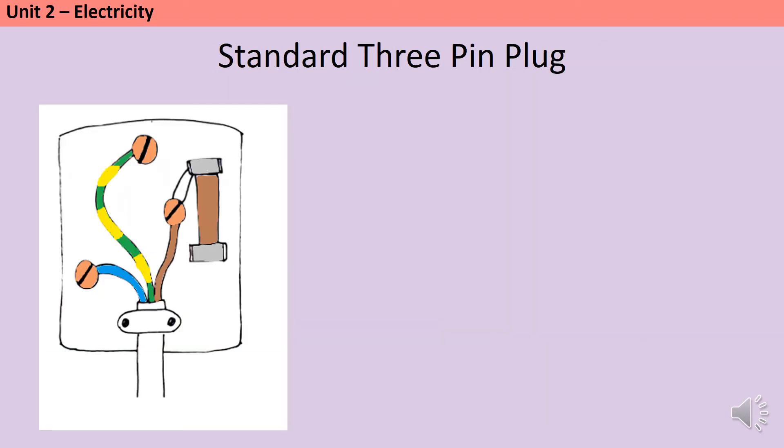The majority of British appliances are connected to the main supply using a standard 3-pin plug, and you need to be able to identify some key features of these. The outside casing of the plug is made of rigid plastic, and this is because plastic is an electrical insulator.